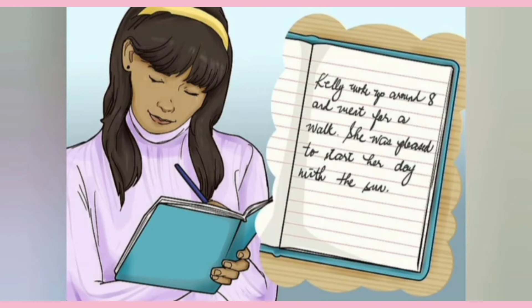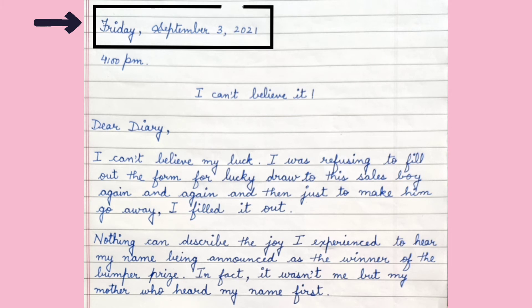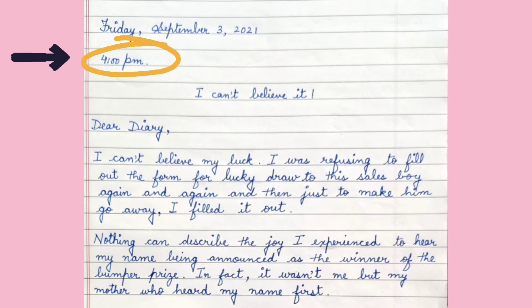Let us now take an example to understand the diary entry in a better manner. This example is from the diary of a girl named Sneha. She has just won a lucky draw and in the lucky draw, she got a car. Let us see how that makes her feel and how the diary entry is written. In the top left corner, we can see the date mentioned: Friday, September 3rd, 2021. The time is 4pm.